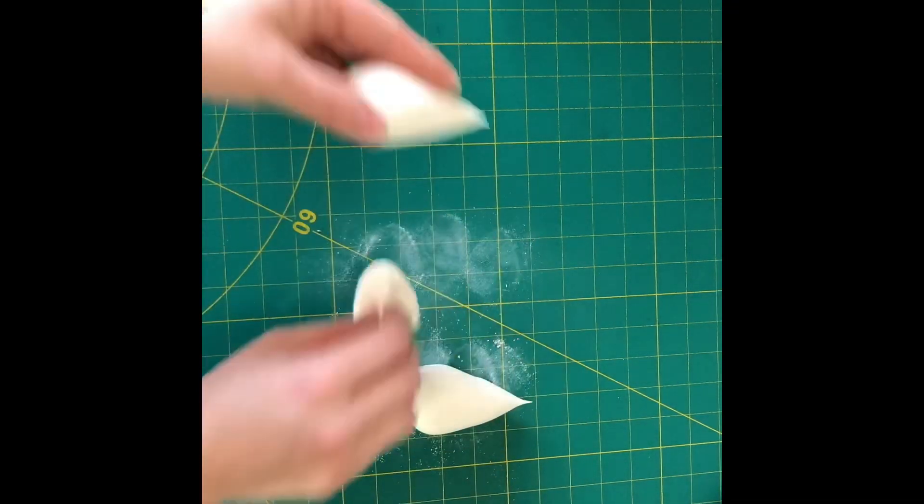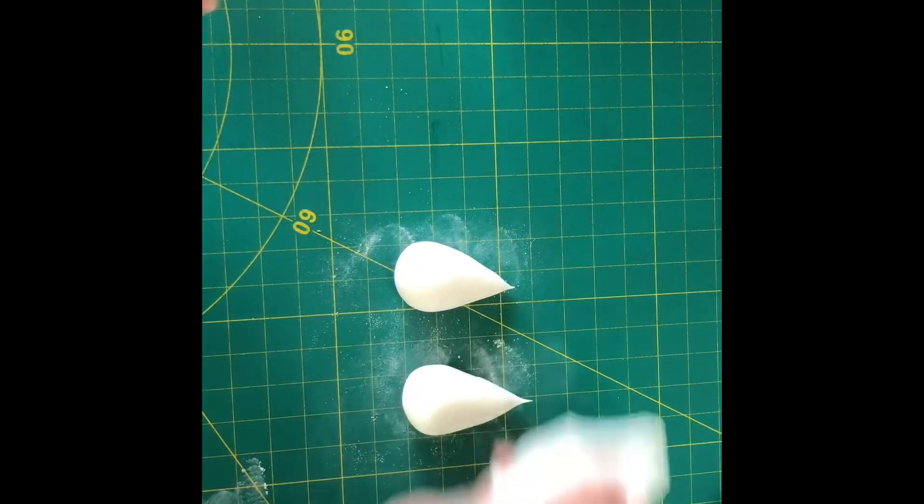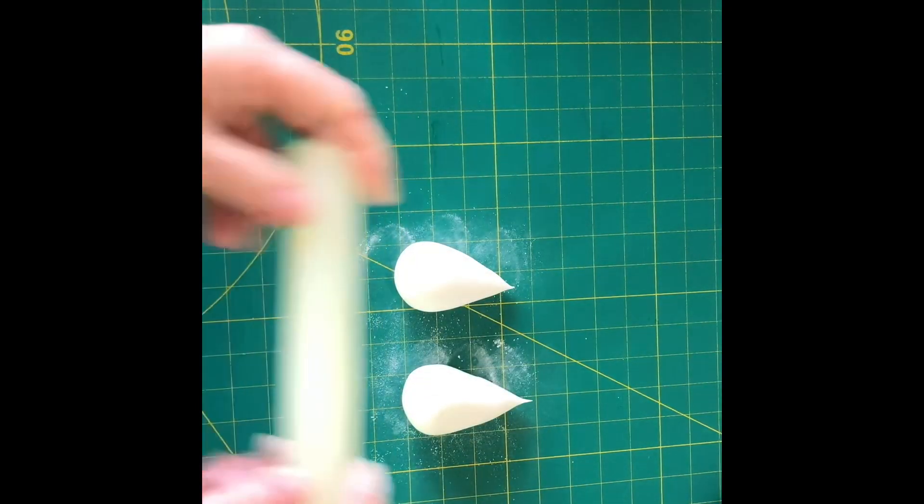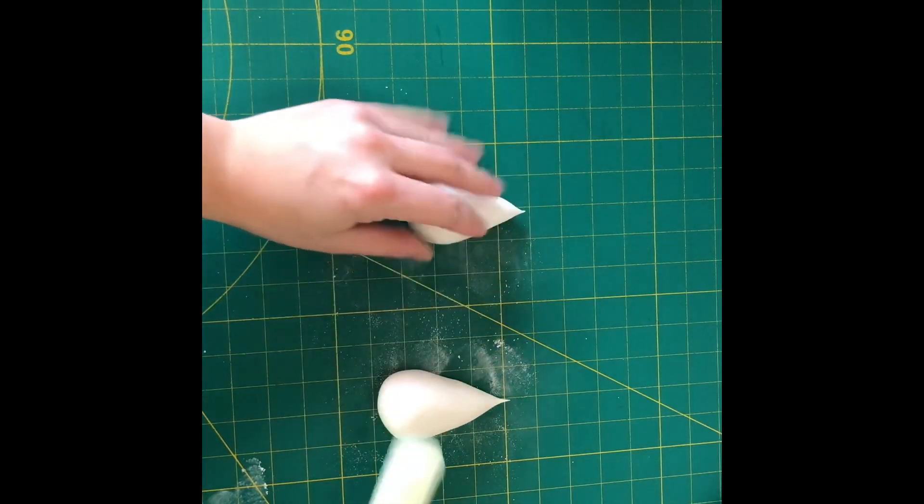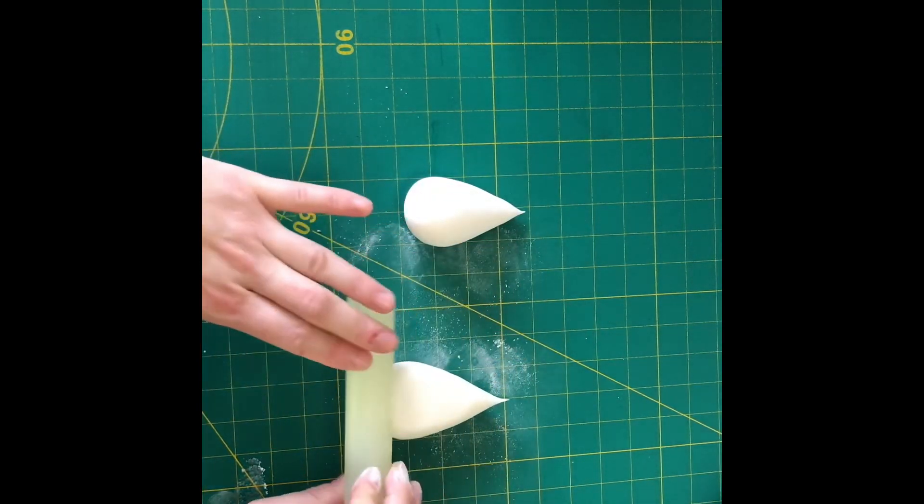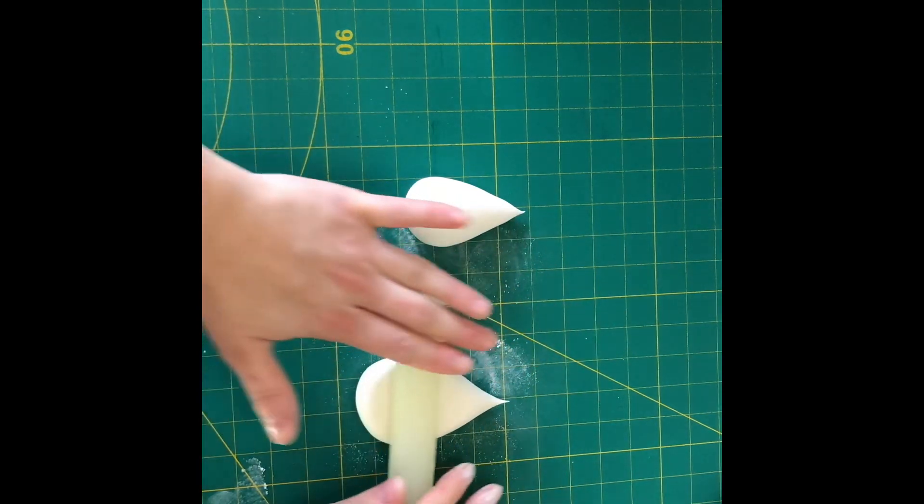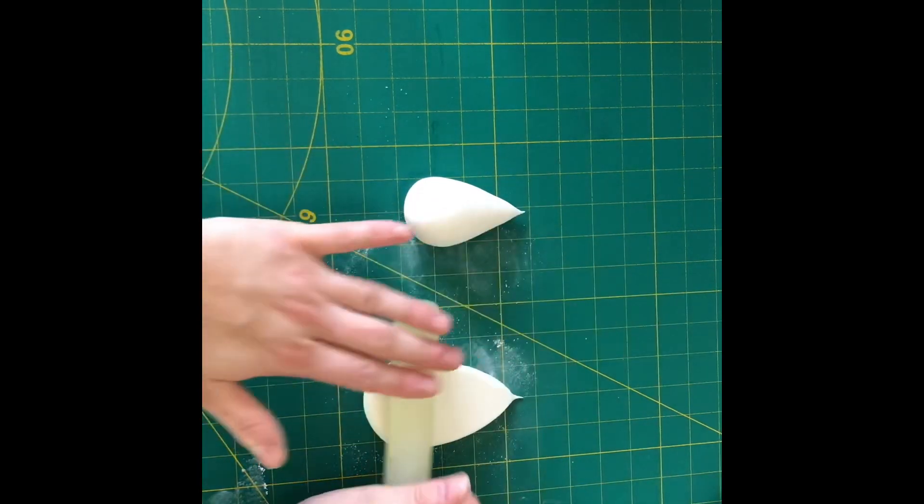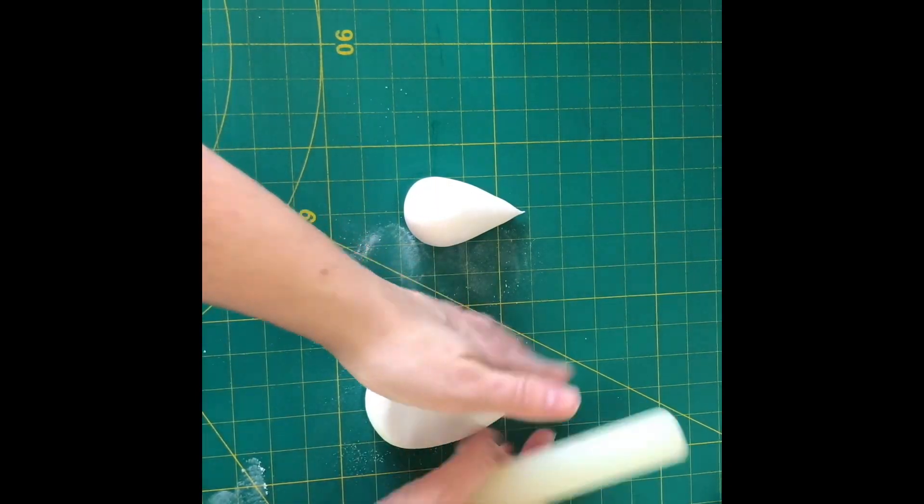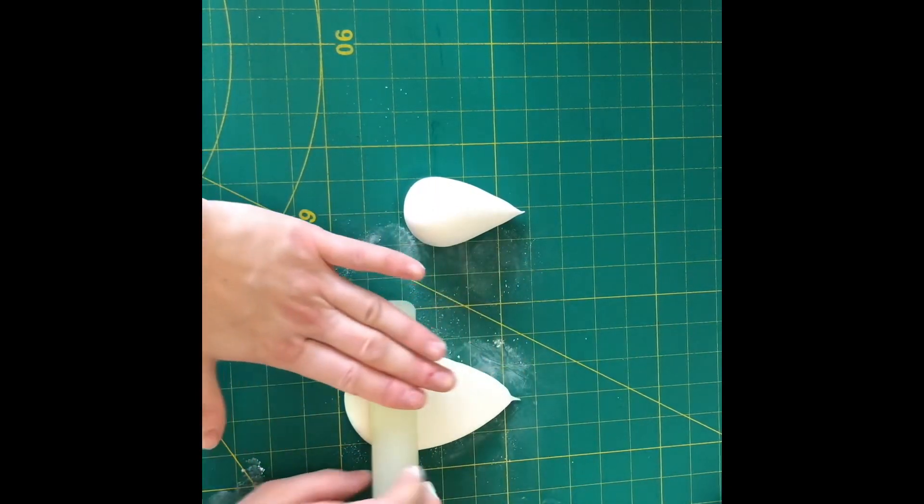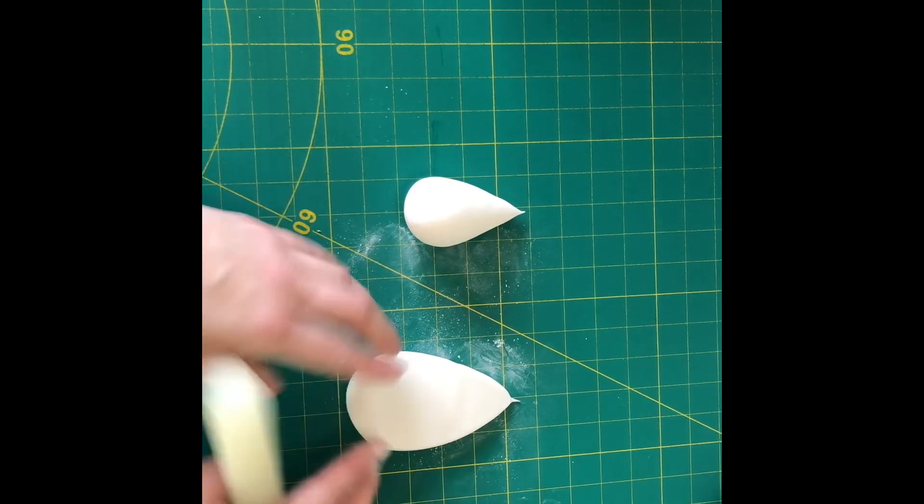Then you need some dusting powder. I use corn flour just to make sure they don't stick to the side. Not too much. Then just a small rolling pin and just slowly start to push down on the icing, especially towards the tip. You still want it to be thick at the base and go thinner towards the tip.